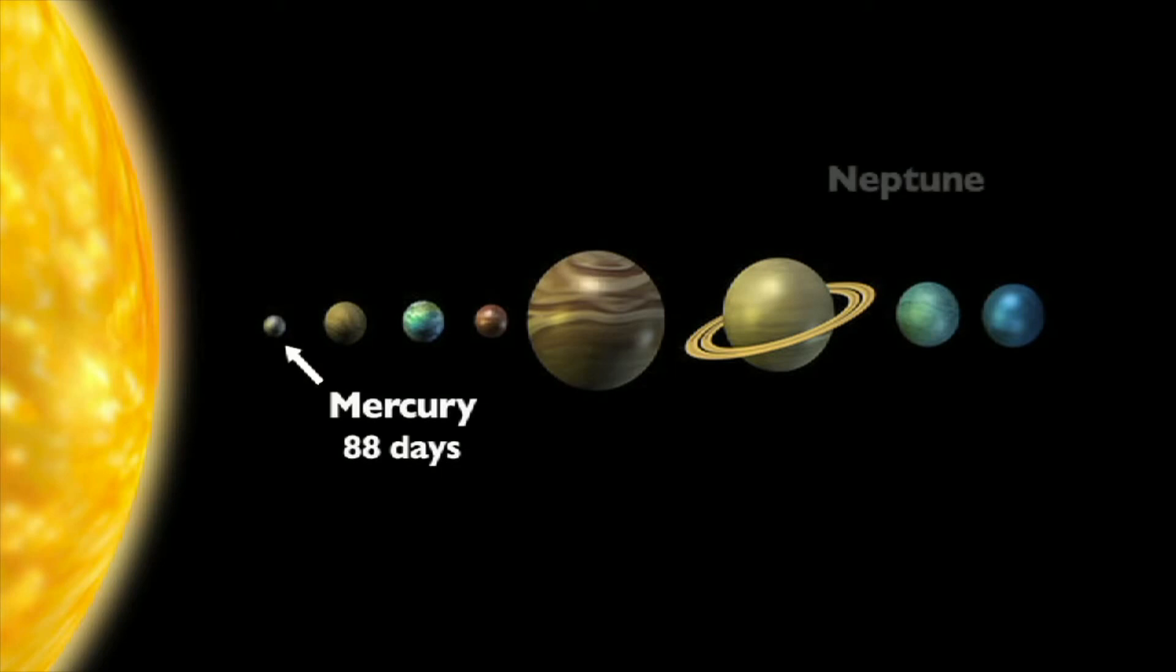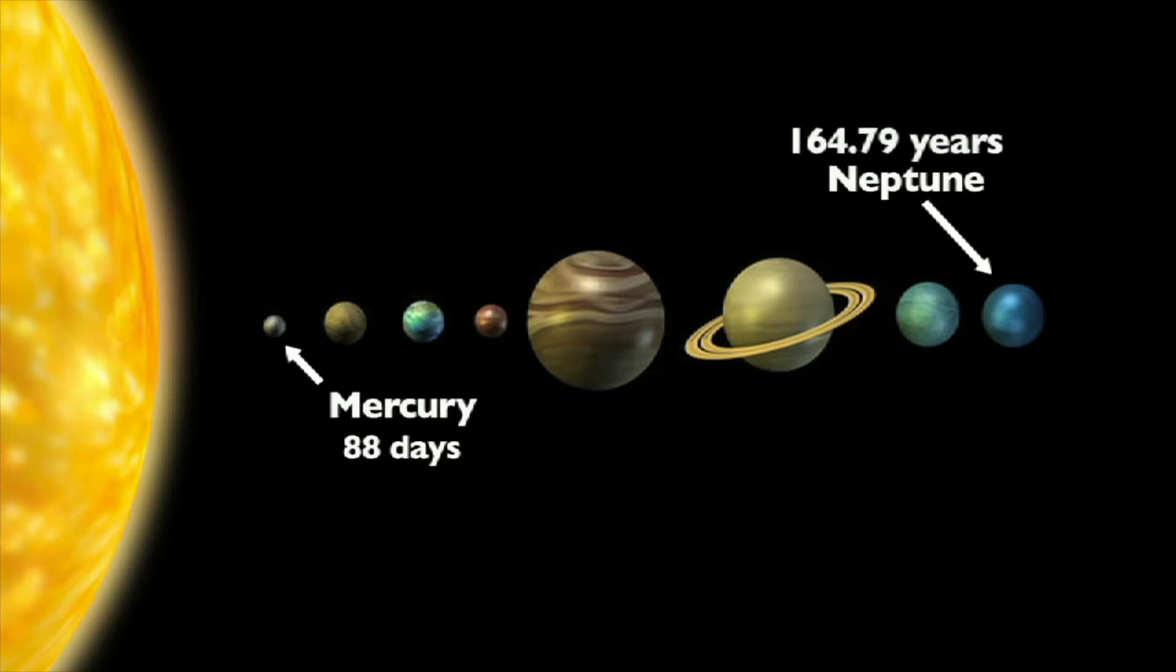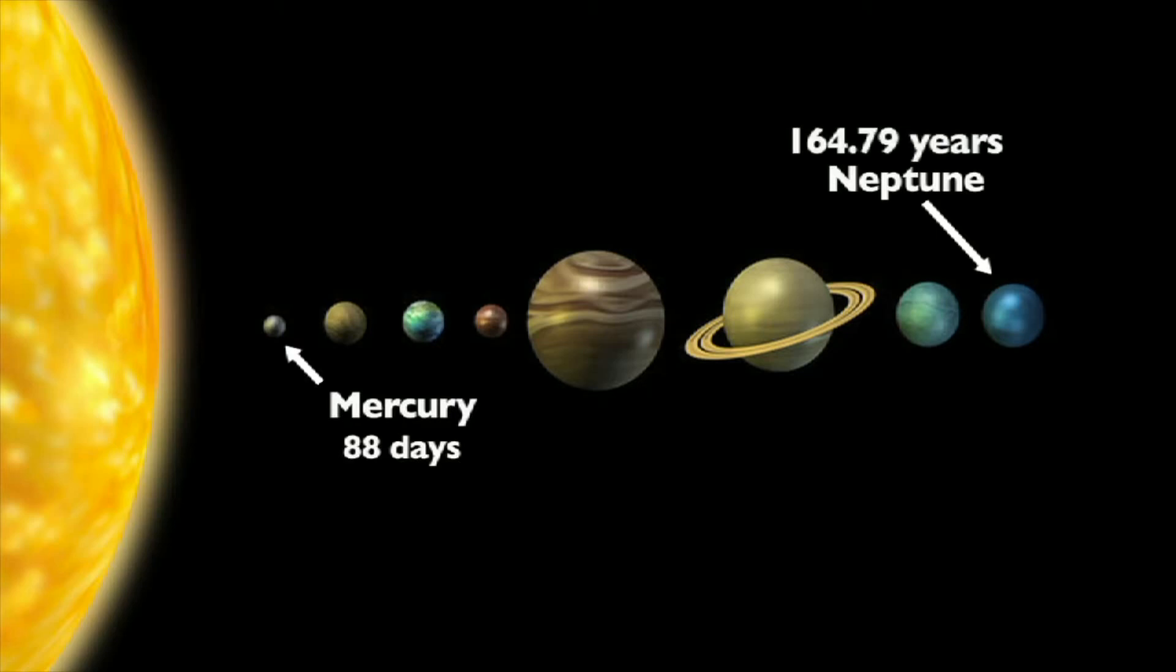While others, like Neptune, have farther to go. It takes Neptune 164.79 Earth years to make one trip around the Sun.